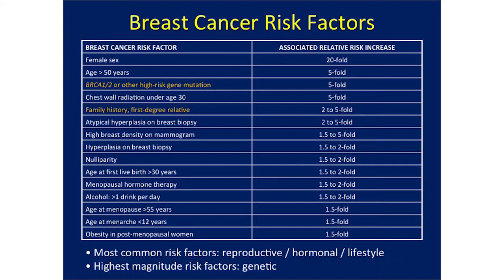Further down the table are a number of other risk factors we might think of as lifestyle or reproductive: age at first live birth greater than 30 years, menopausal hormone therapy, alcohol, obesity, and some other factors. The portrait given here is that the most common risk factors across the population for breast cancer are reproductive, hormonal, and lifestyle — but at the highest magnitude, the risk factors we know of are genetic. So it behooves us to think about both as we manage this disease.